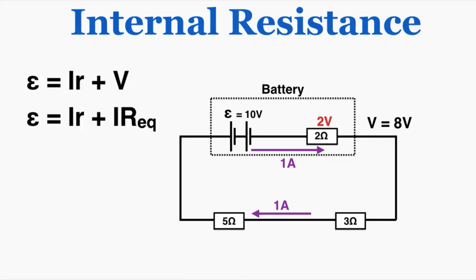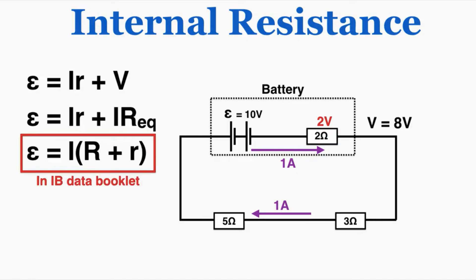If I rearrange this equation and call V the current times the equivalent resistance outside of the battery, I end up with this equation: the EMF is equal to the current multiplied by the sum of the resistance in the circuit plus the internal resistance of the battery. This equation appears in your IB data booklet — this is the information you're given about EMF and internal resistance in general.